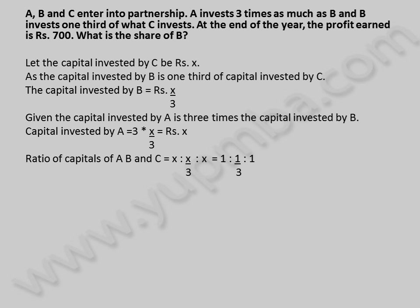Ratio of capitals of A, B, and C is equal to X : X/3 : X, which simplifies to 1 : 1/3 : 1.